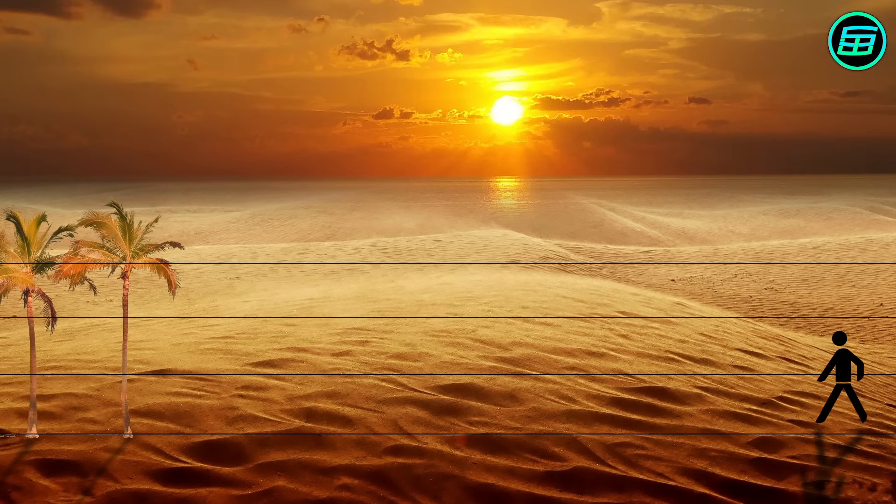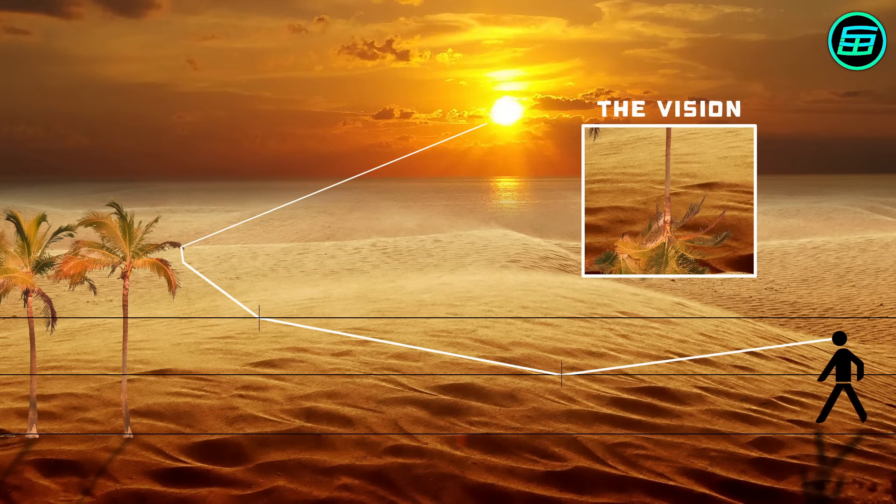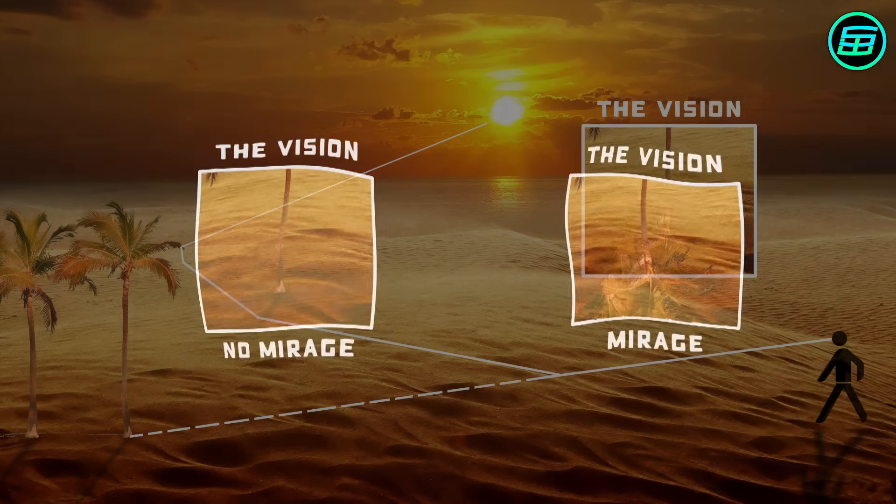Light coming from an object starts to be refracted between the air layers. But if the light's angle is bigger than the critical angle between two layers, then total internal reflection occurs. When this happens, even though there's no actual object in our field of vision, we can still see the object.